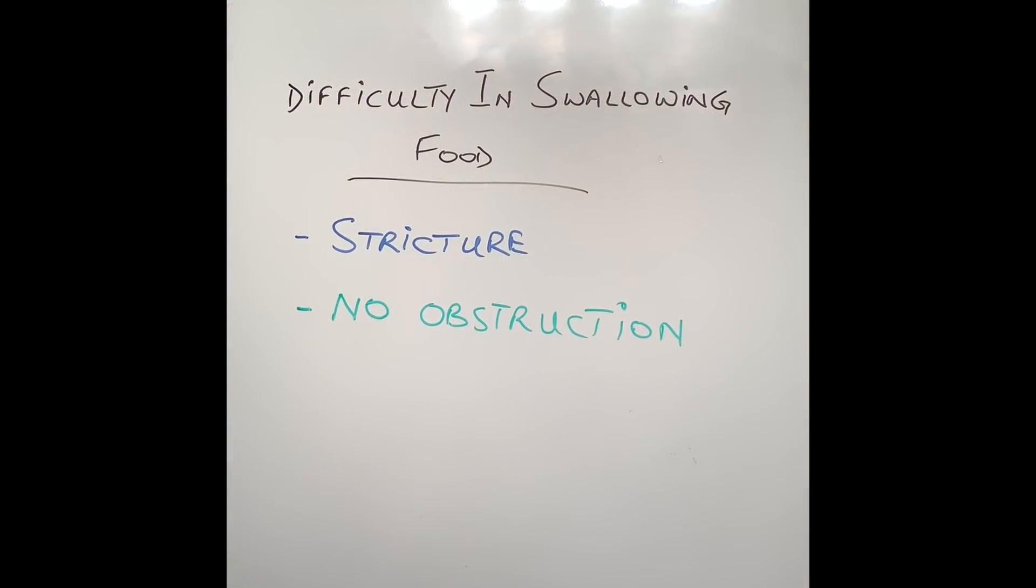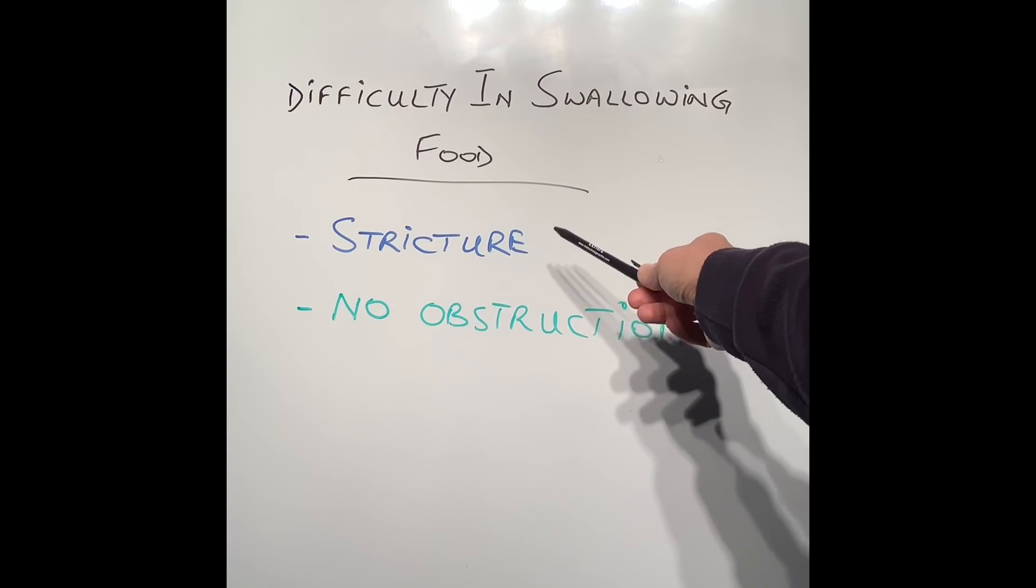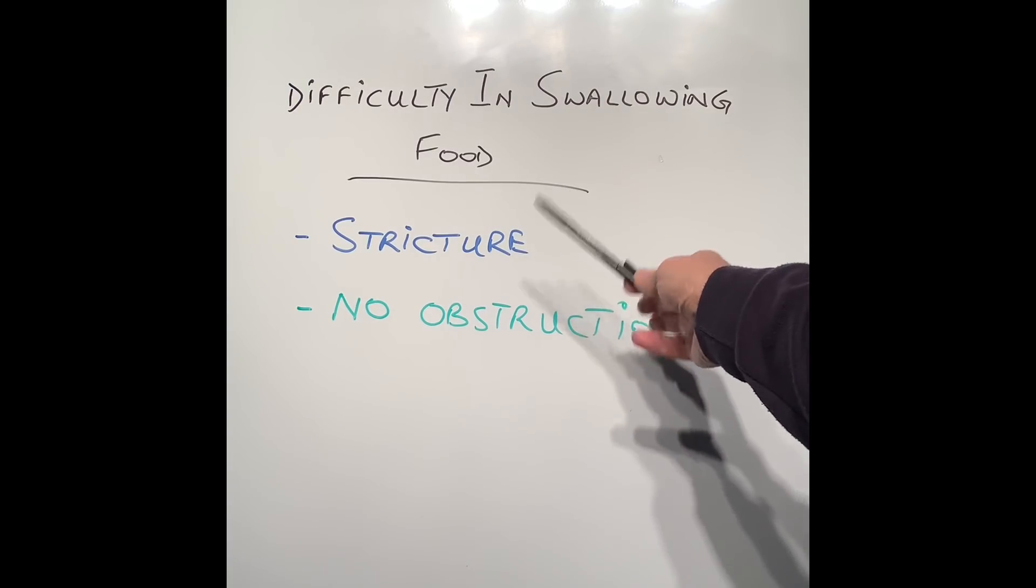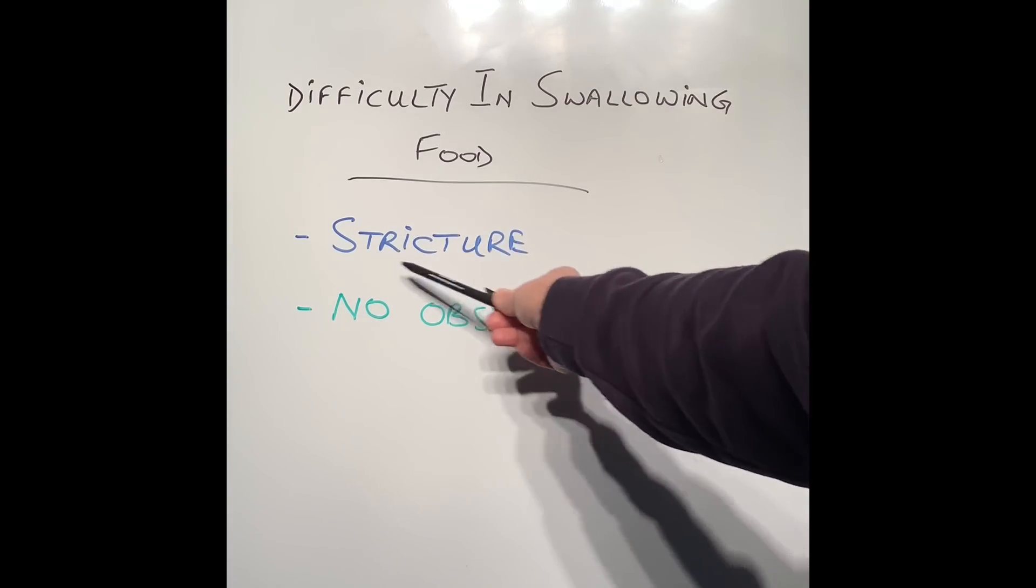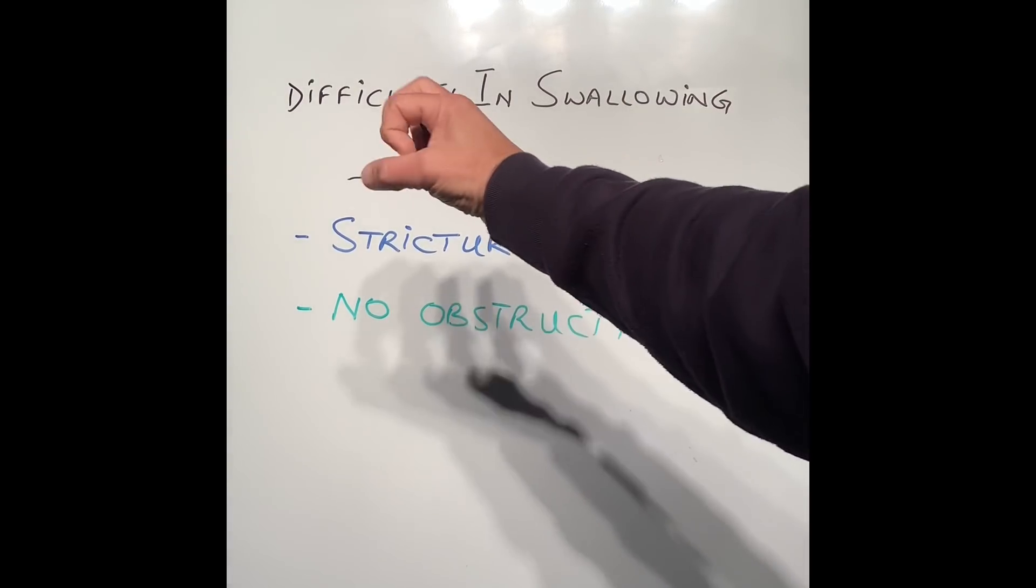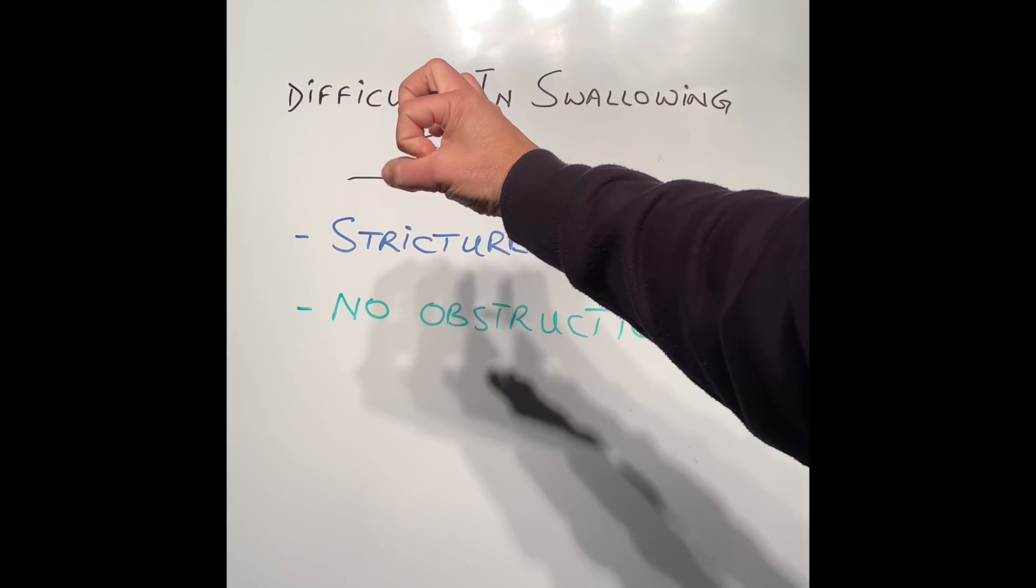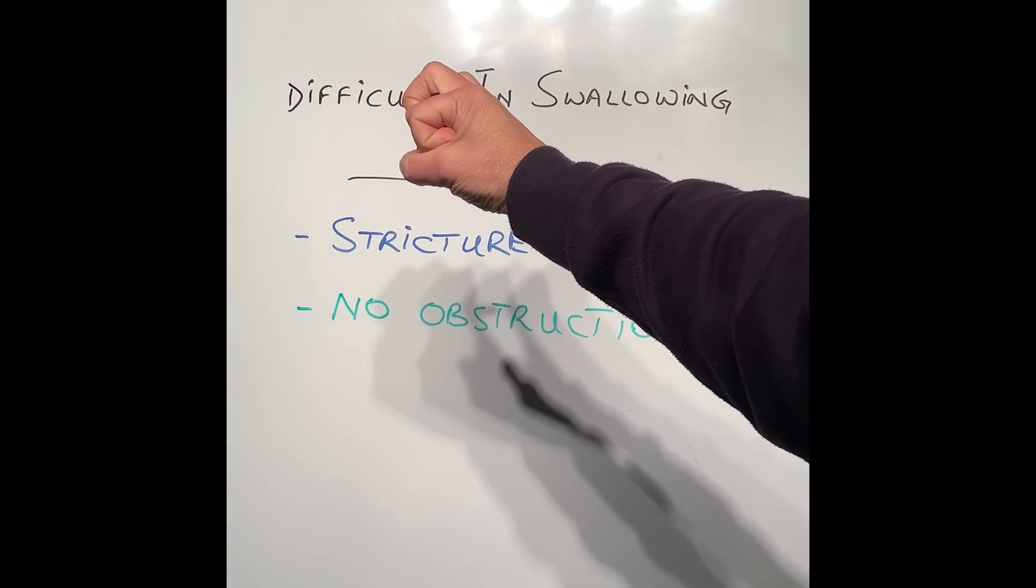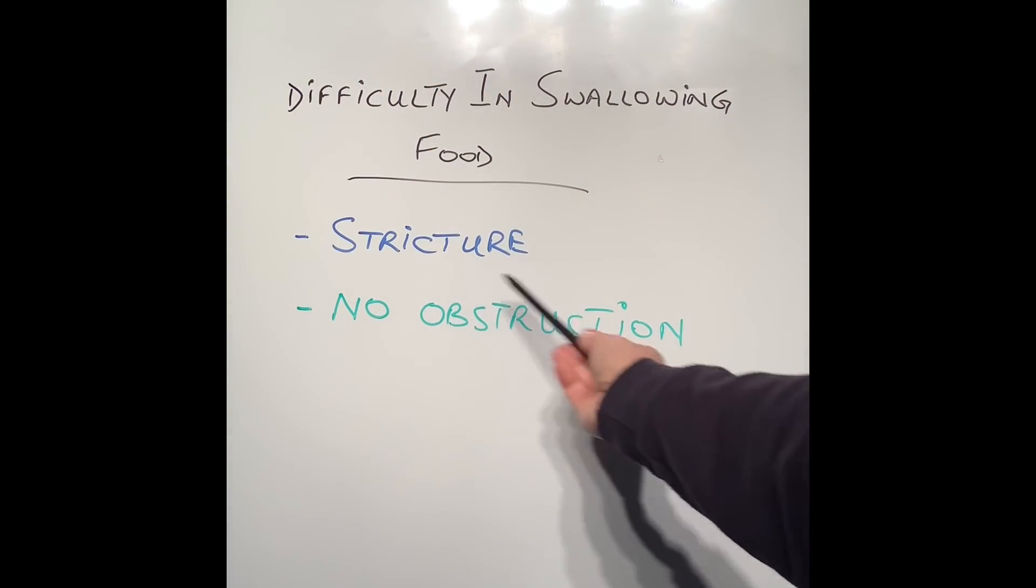You might remember in the previous video I was talking about difficulty in swallowing food, and one of the reasons was chronic acid reflux. When reflux has been going on for a long time, we get scarring of the esophagus, and the esophagus instead of having a hole like this size becomes very tight, and food or whatever we drink gets stuck and can't go through.